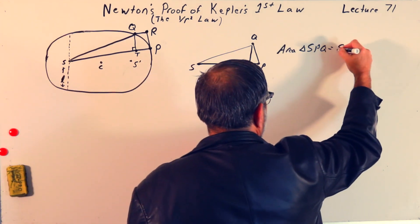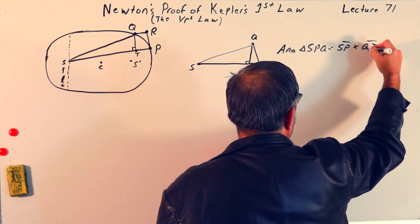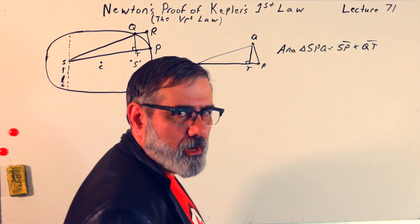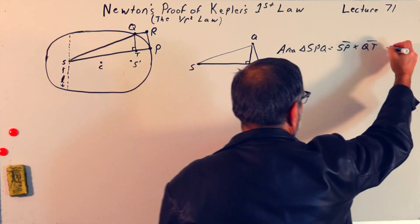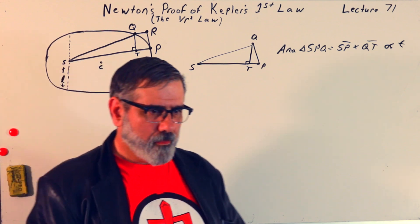And here I drop down a perpendicular. That's going to be the point T. Right, so the area of this triangle, S, P, Q, is just equal to, I've got to put the S here, S, P, times Q, T.